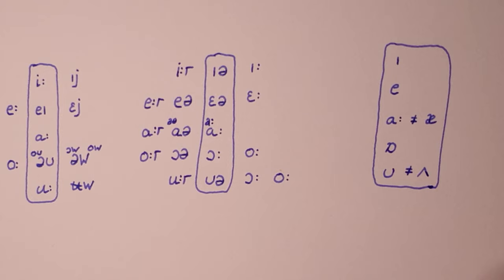In SSB, dress and trap are more open: dress and trap. I have to admit I keep hearing trap, though. Lot, on the other hand, is more closed: lot, while foot is more centered: foot.